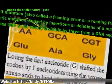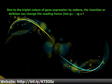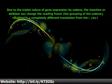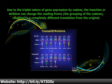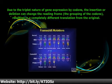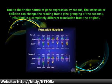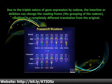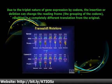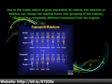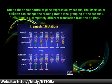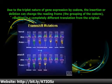Due to the triplet nature of gene expression by codons, the insertion or deletion can change the reading frame — the grouping of the codons — resulting in a completely different translation from the original.